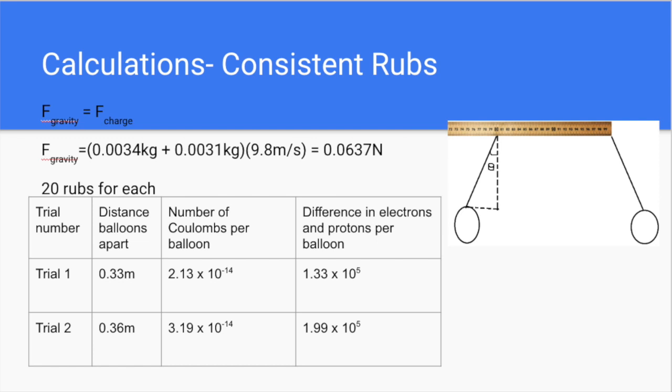For the math, we just found the angle which the balloon made, and then used that to find the forces between the different balloons, and used that to find the number of coulombs and electrons.